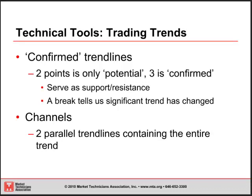We also want to take a look at confirmed trend lines. Any two points can create a line, so once we've drawn a trend line with two points, it's only a potential trend line. The next time the stock or security gets close to that line, it's a potential support or potential resistance. Once we've got three touch points, it's a confirmed trend line, which makes it more likely to serve as support and resistance, but also makes a break much, much more significant — more likely to tell us that the significant trend has actually changed and we're going to continue moving in the other direction.